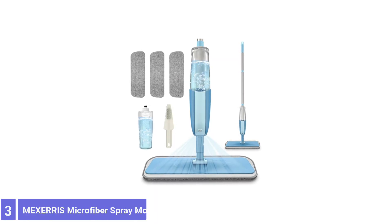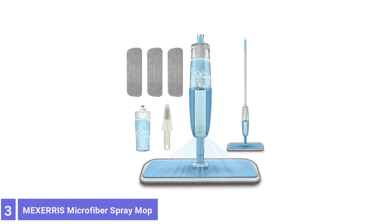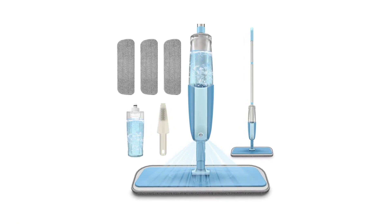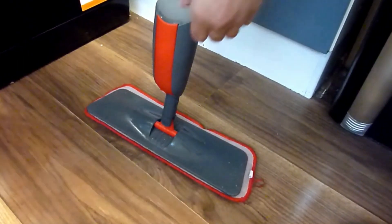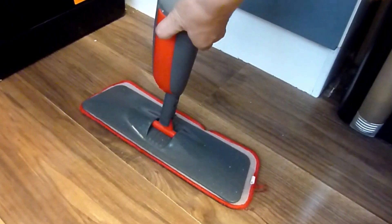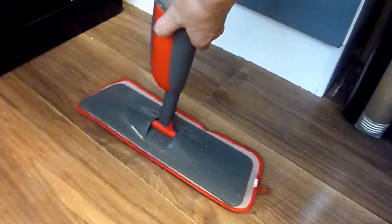Number 3. MEXERIS Microfiber Spray Mop for Floor Cleaning. This manual spray mop features a squeeze trigger control on its handle that dispenses a fine mist of product onto your vinyl, hardwood, linoleum, and concrete floors. The bottom layer is microfiber, which picks up dirt and debris.